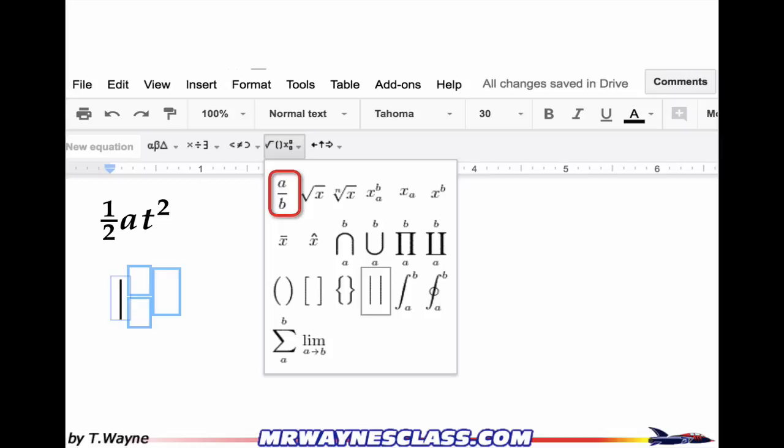But your cursor is in the top part of the fraction right now. So I'm going to type a one. And then I'm going to press the arrow key or the tab key to go to the next box. When I do that it'll go down below and I'll type a two. Then I'll press the right arrow key or a tab button and it goes to the next box. And at this point I'm back on the baseline of the text and I can type normally.